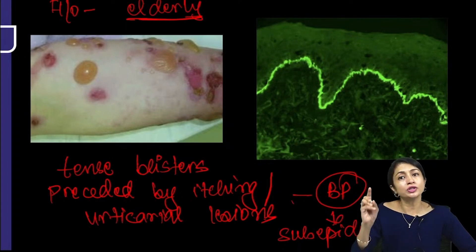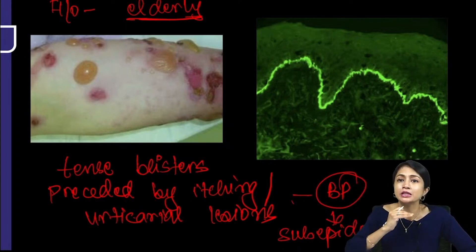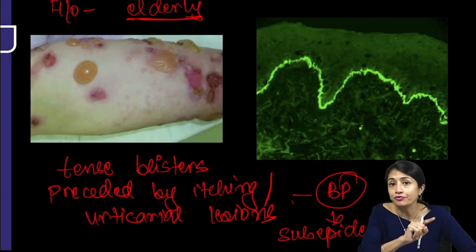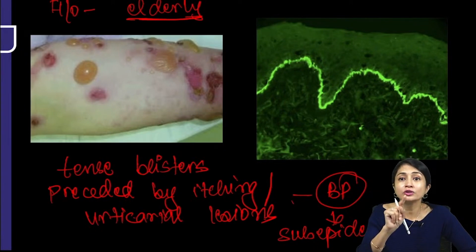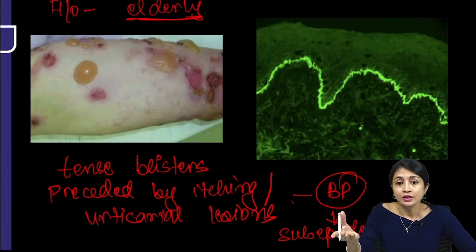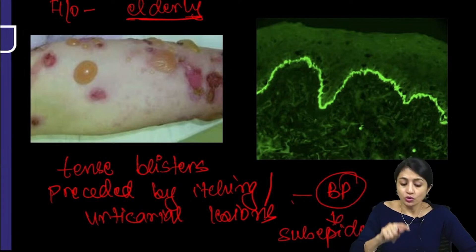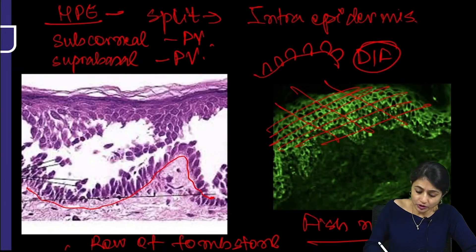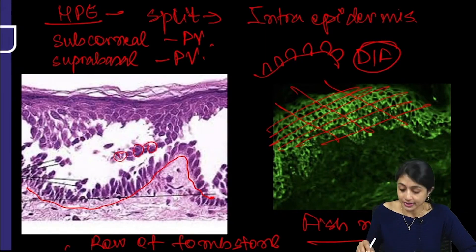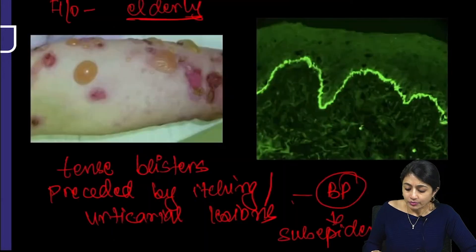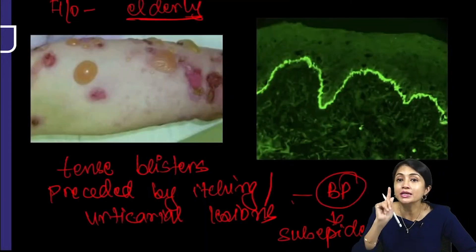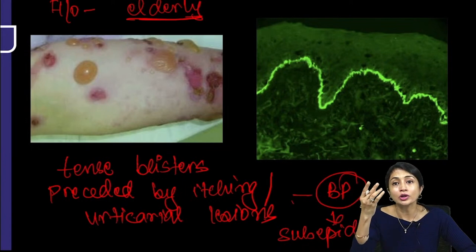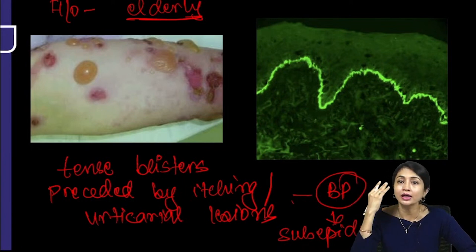In histopathology you would see a sub-epidermal split. In the pemphigus group, you also see acantholytic cells. In bullous pemphigoid, you see a sub-epidermal split but there will be no acantholytic cells, because acantholytic cells are keratinocytes present in the epidermis.